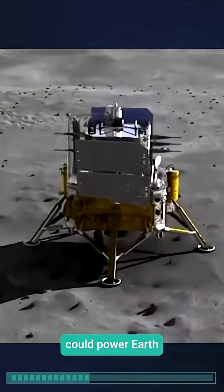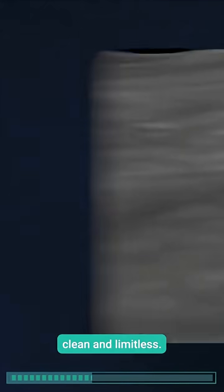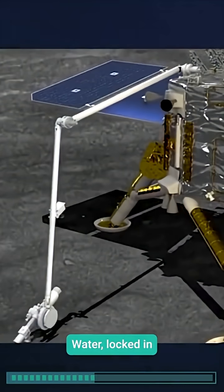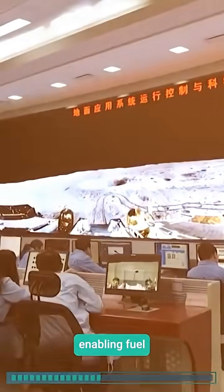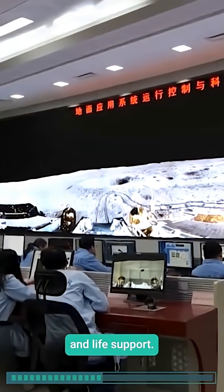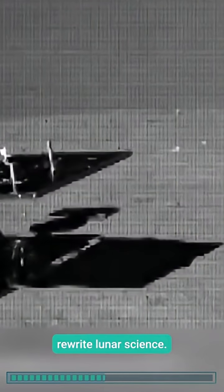Just one ton could power Earth for a year, clean and limitless. Water, locked in glass beads at 2,000 parts per million, exists everywhere, enabling fuel and life support. These findings rewrite lunar science.